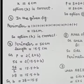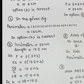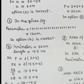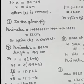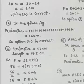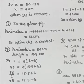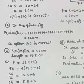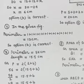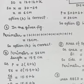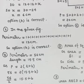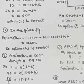Question number 6: for the figure given in the book, we have to find the perimeter, which is the sum of all the sides. The sides are already given. Adding them all, we get 12 cm. So option B is correct.